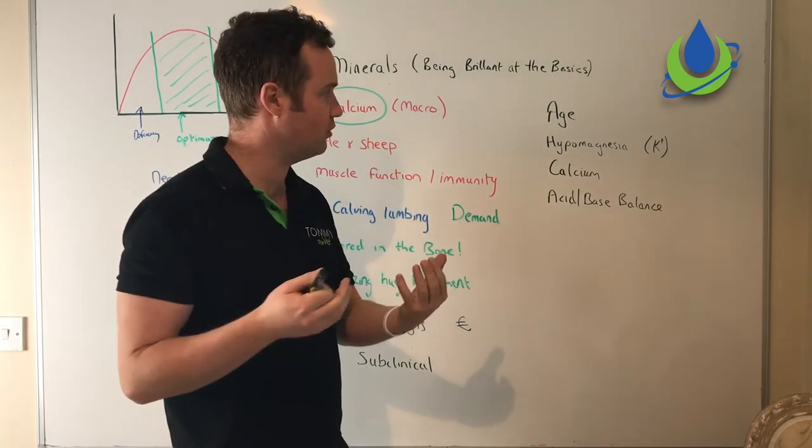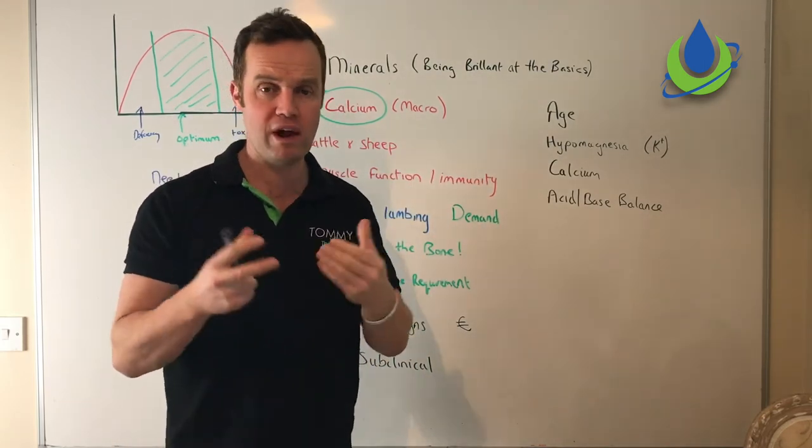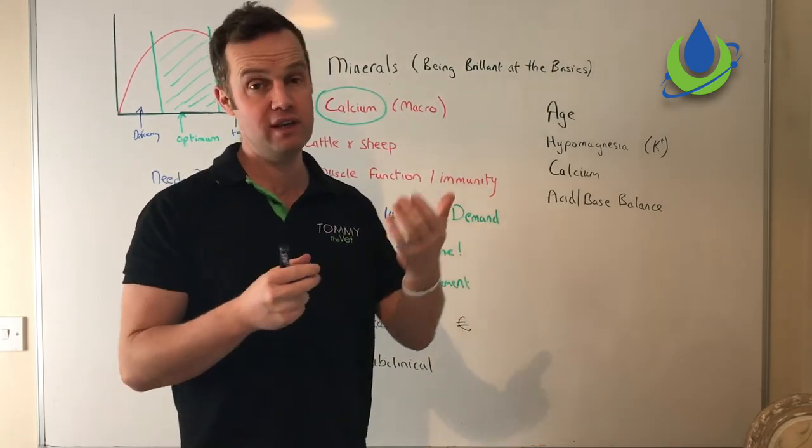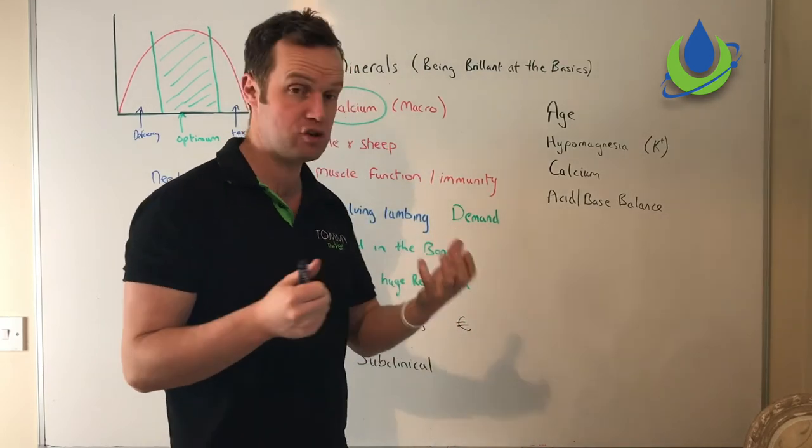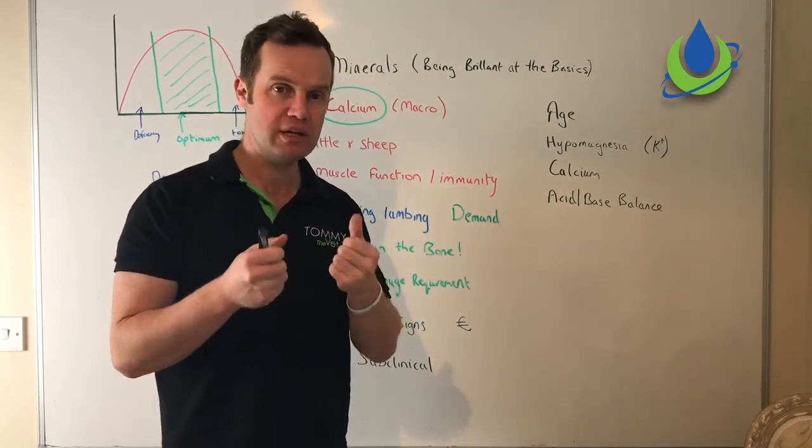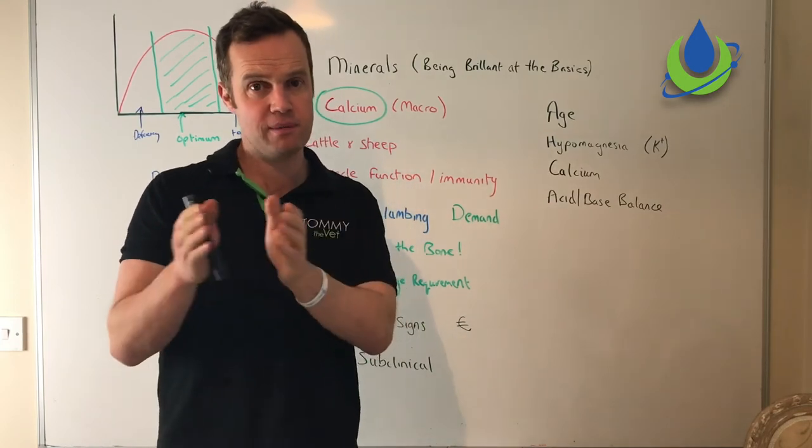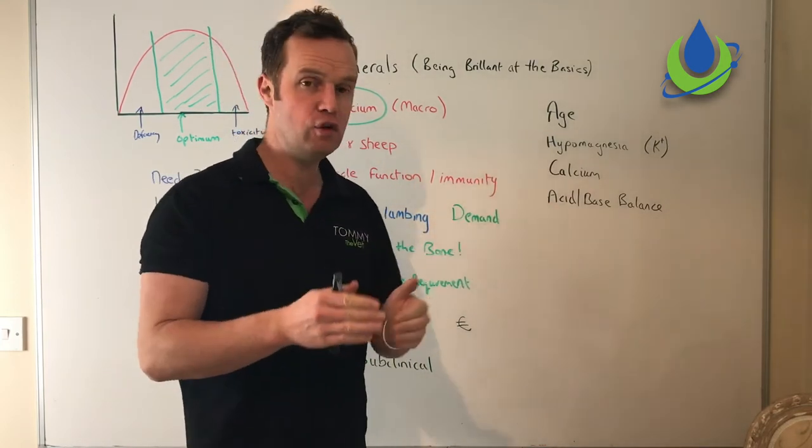There's a number of factors here. Age of animals: older animals are more prone. Certain breeds are more prone, like Jerseys. So if you have a really high-risk animal, you might need to supplement with oral calcium even at the point of calving.